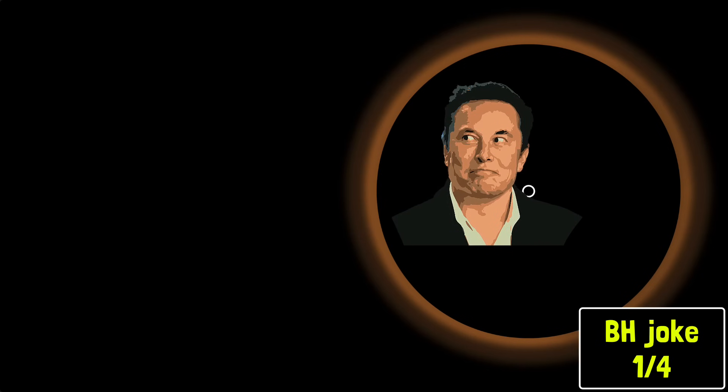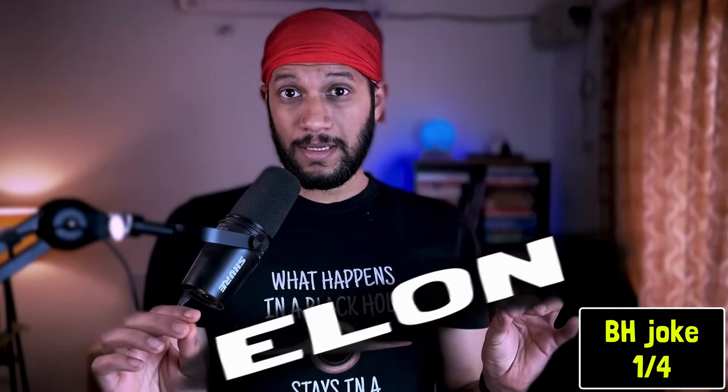But before that, what happens when Musk enters a black hole? He gets elongated. So Einstein, what's wrong with this explanation? The escape speed is more than the speed of light, so nothing can escape this object. Therefore, it's a black hole, right?